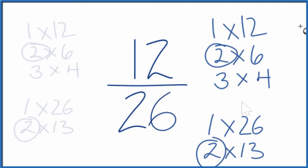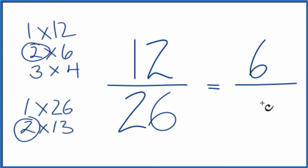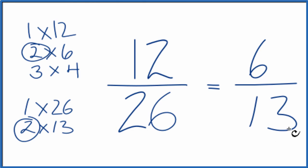So 12 divided by 2 gives us 6, and 26 divided by 2 is 13. We've simplified 12/26 down to 6/13. We can't simplify this any further. Note that 12 divided by 26 and 6 divided by 13 give you the same answer — it's just that we've simplified 12/26 down to 6/13.